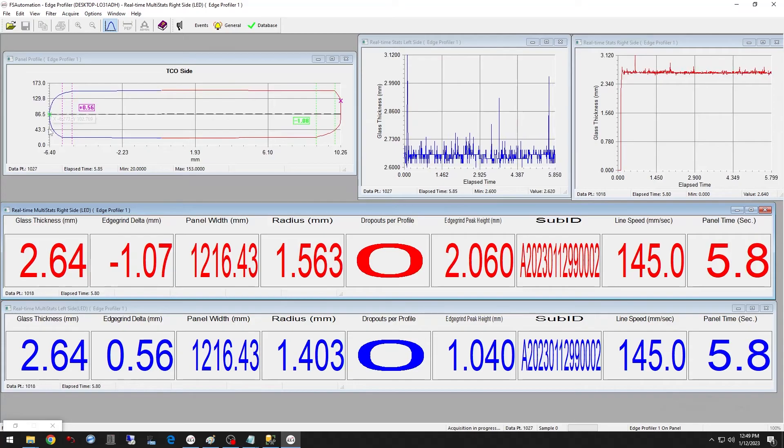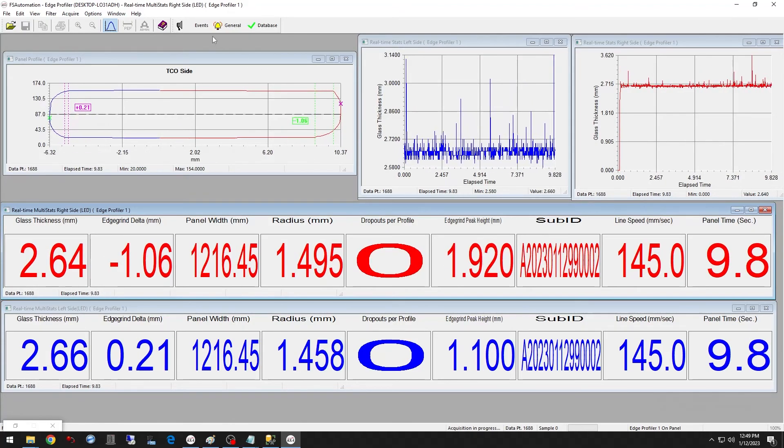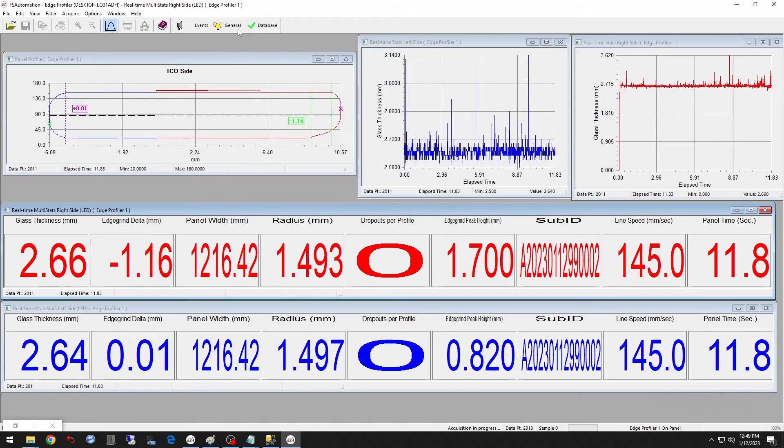One common type of defect we can detect in the edge grinding process is referred to as a shiner which occurs when the edge grind wheels are not positioned properly. The result is a partially ground edge that does not meet the radius specification.